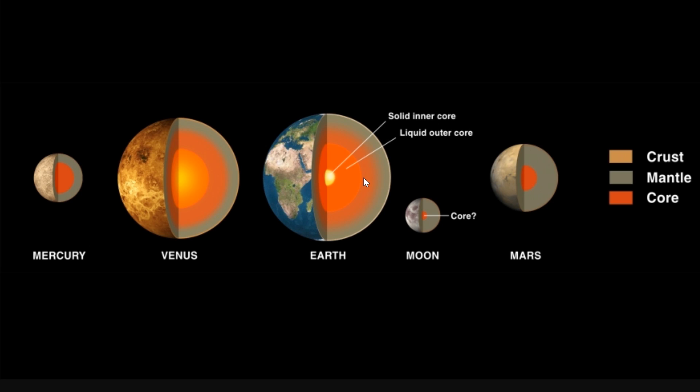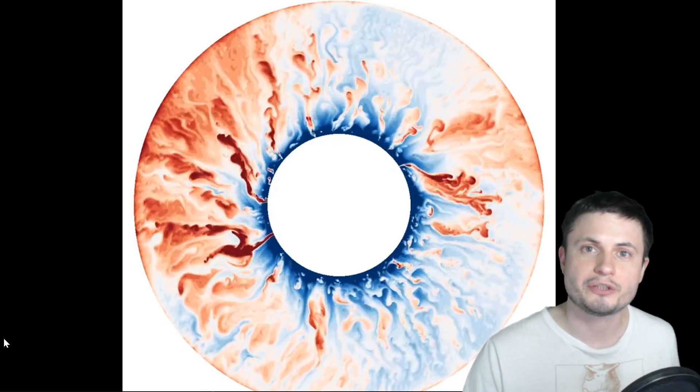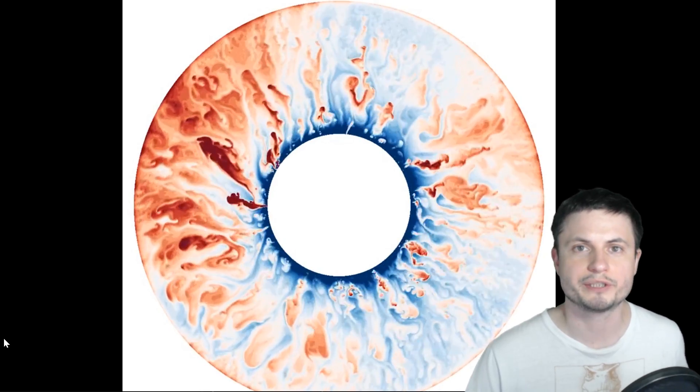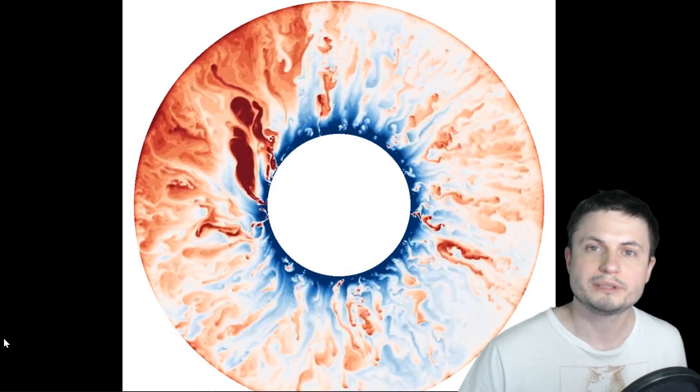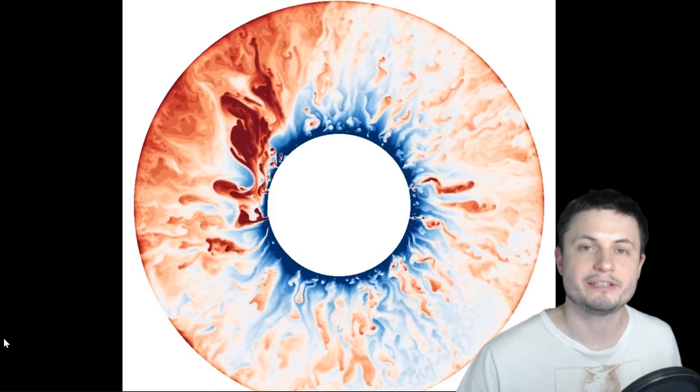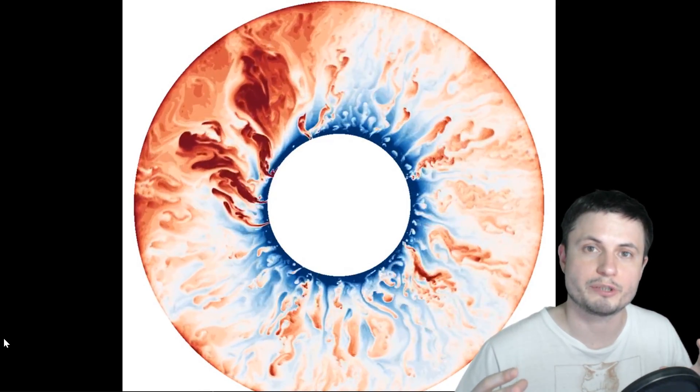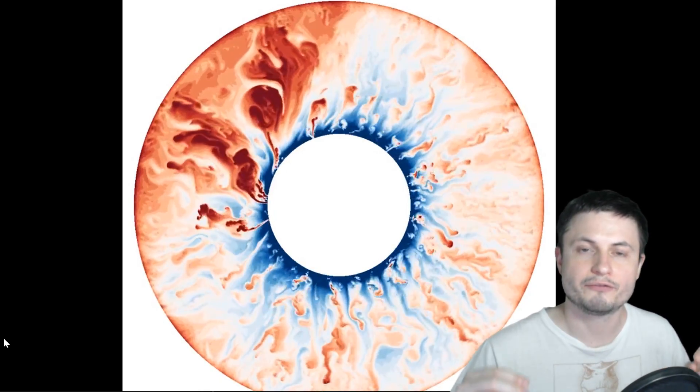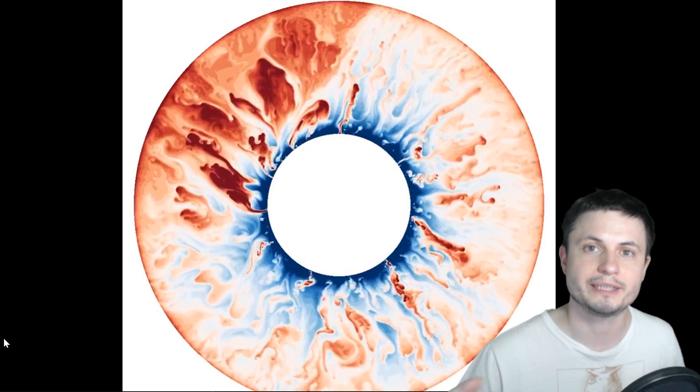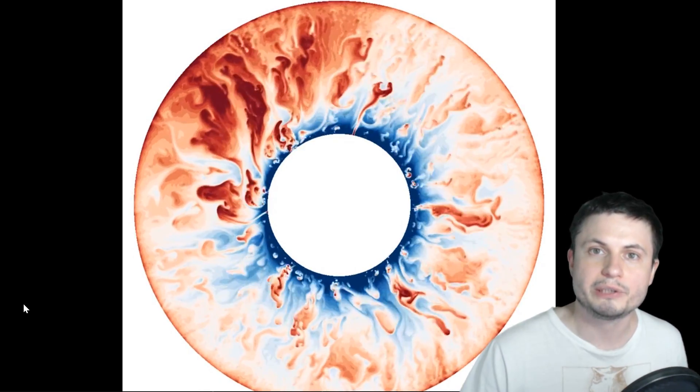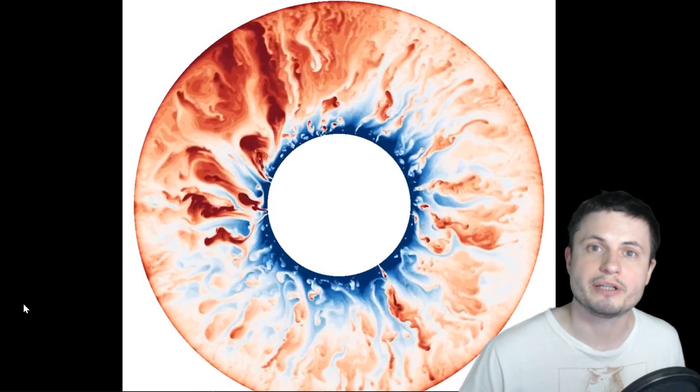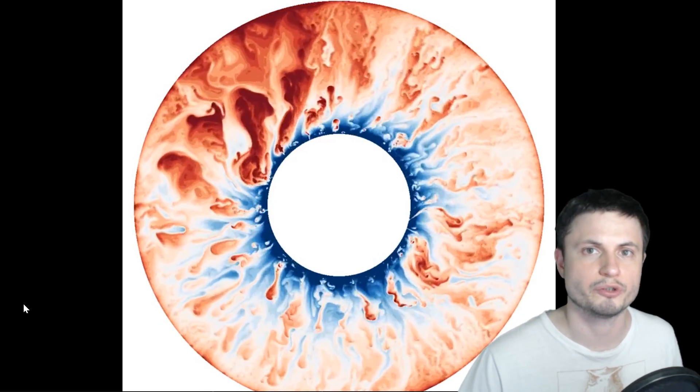So today we believe that the reason we have the magnetic field is because of the so-called liquid outer core that's churning and moving around in the fashion that you see right here. This is actually one of the more recent simulations created by the scientists. And we believe this motion is caused by the central inner solid core that's so hot and so dramatically different in temperature that it forces the outer core to circulate in this fashion. And because the material here is metallic, the circulation then creates the magnetic lines that we're observing.